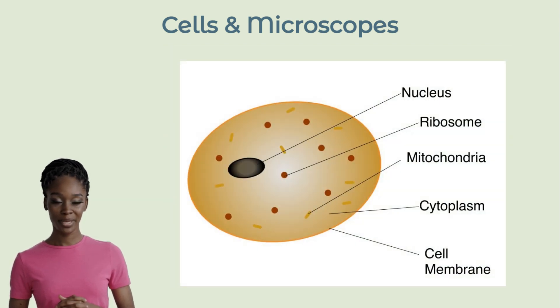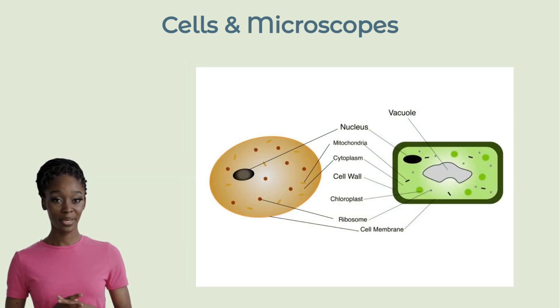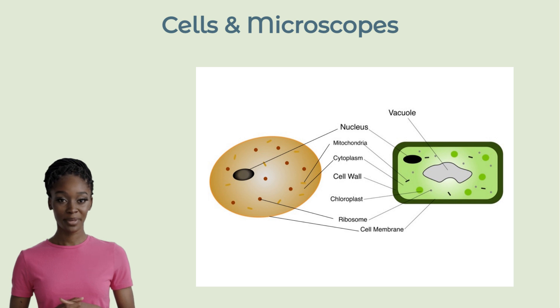Animal cells also have a cell membrane, cytoplasm, nucleus, ribosome and mitochondria. However, unlike plant cells, they don't have a cell wall or chloroplasts. Animal cells also lack the large central vacuole found in plant cells.